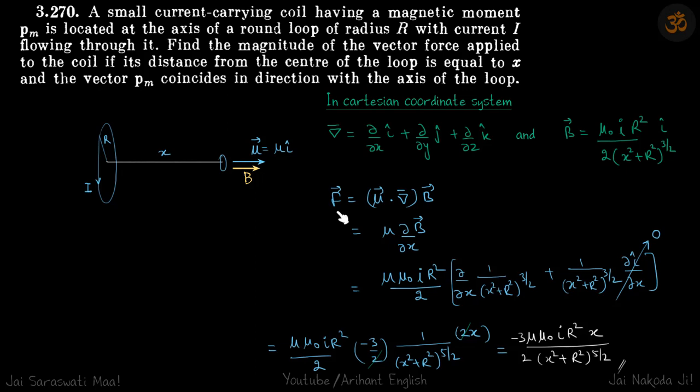So d b by dx, there is an i cap also here so we can break it into two. This will be d by dx of one by x square. Constants if we take out it will be x square plus r square power 3 by 2. There should be one i cap also here.